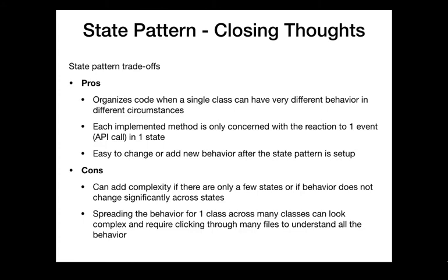Once we have the structure set up with our state diagram and state transitions, writing each method should be pretty easy. Instead of wrapping our heads around the entire behavior of an object, we ask: when I'm in this state and this API method is called, what's the behavior? It's a very narrow focus. The downside is we're moving complexity to the number of classes — we end up with a lot more classes and structure.